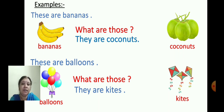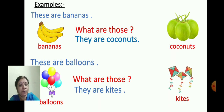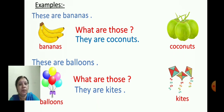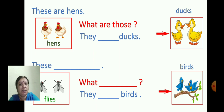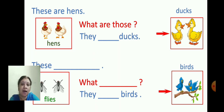Now open your active English book, chapter number 23. We will write in the book. See the first picture — hens. The sentence will be: these are hens. H-E-N-S — hens.